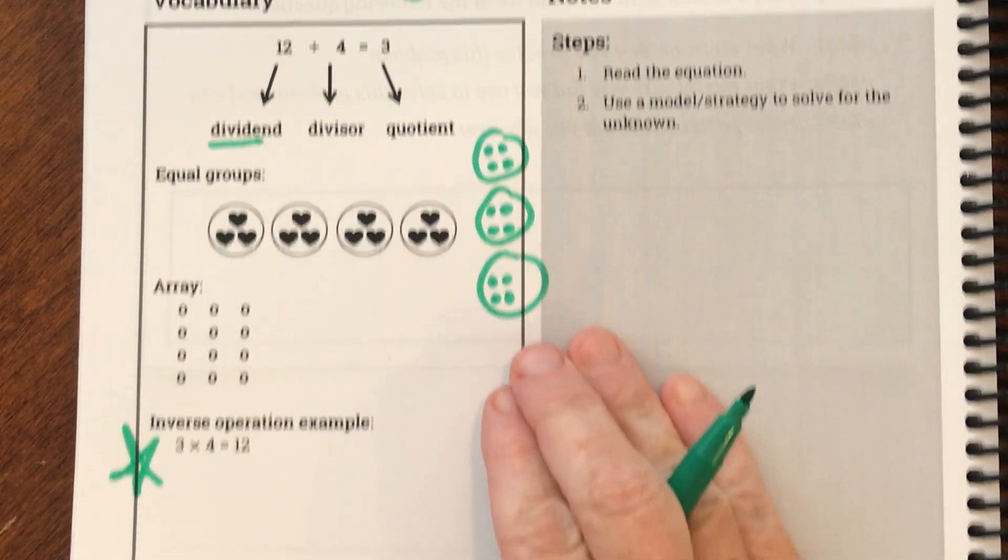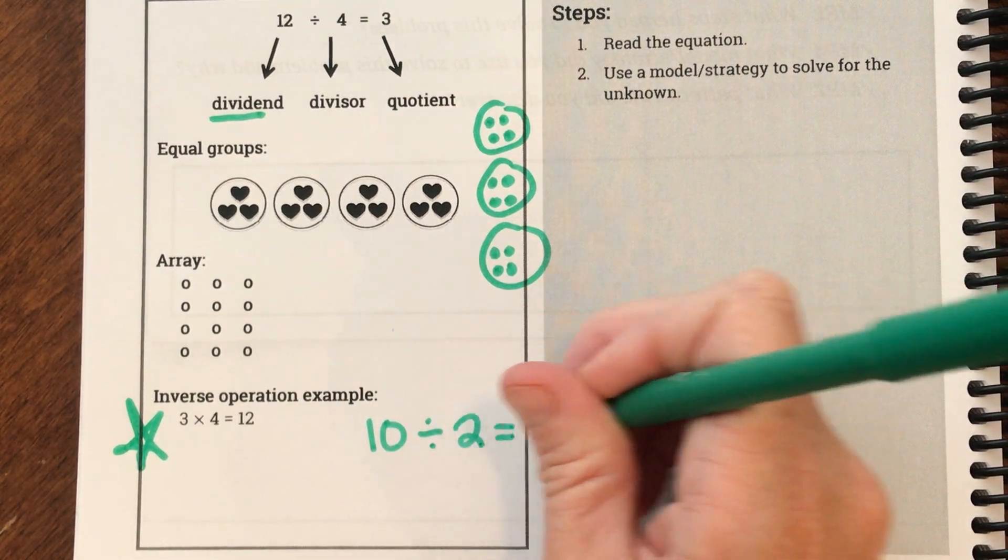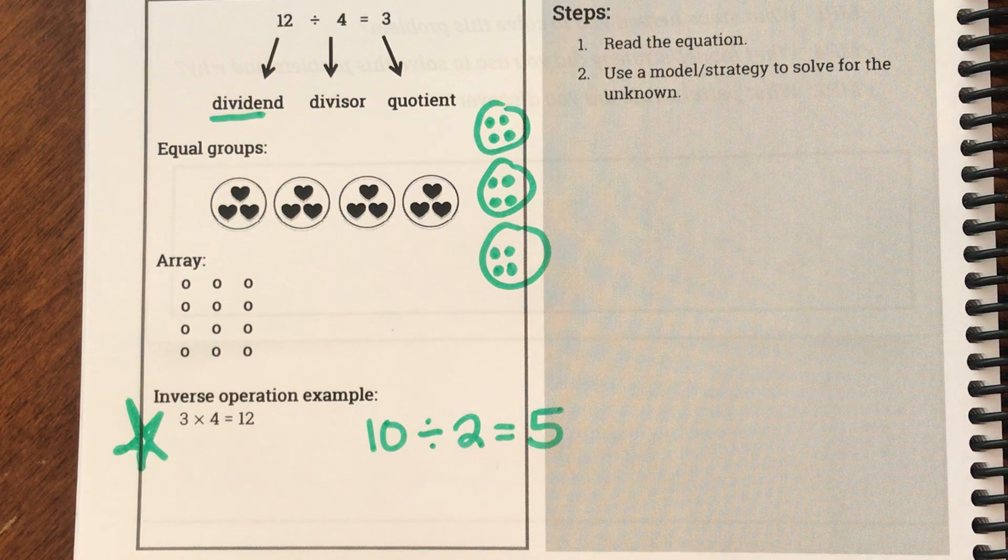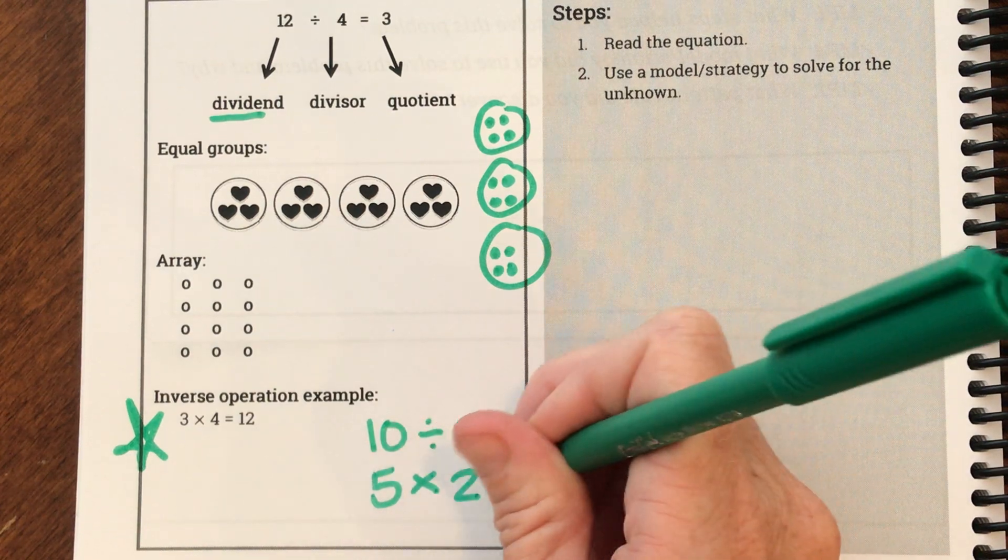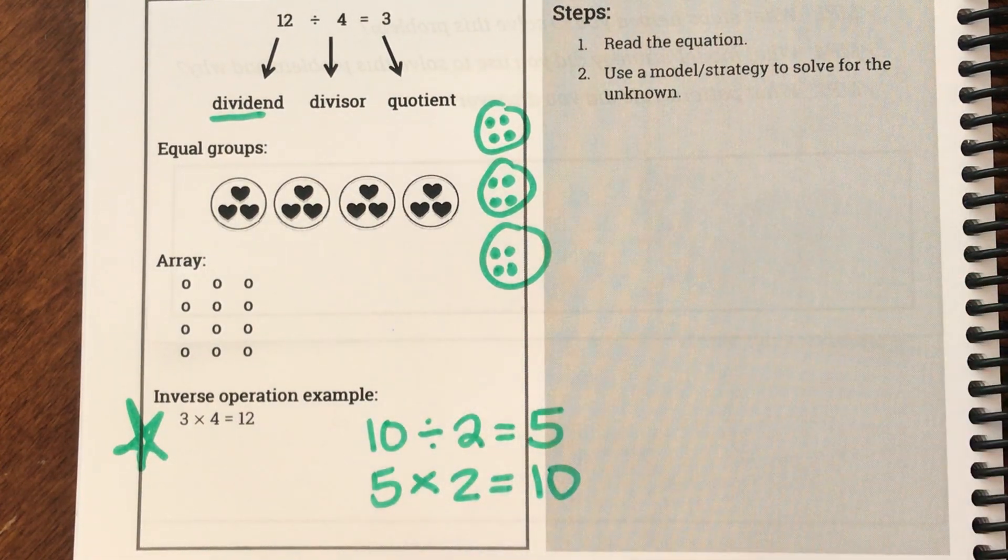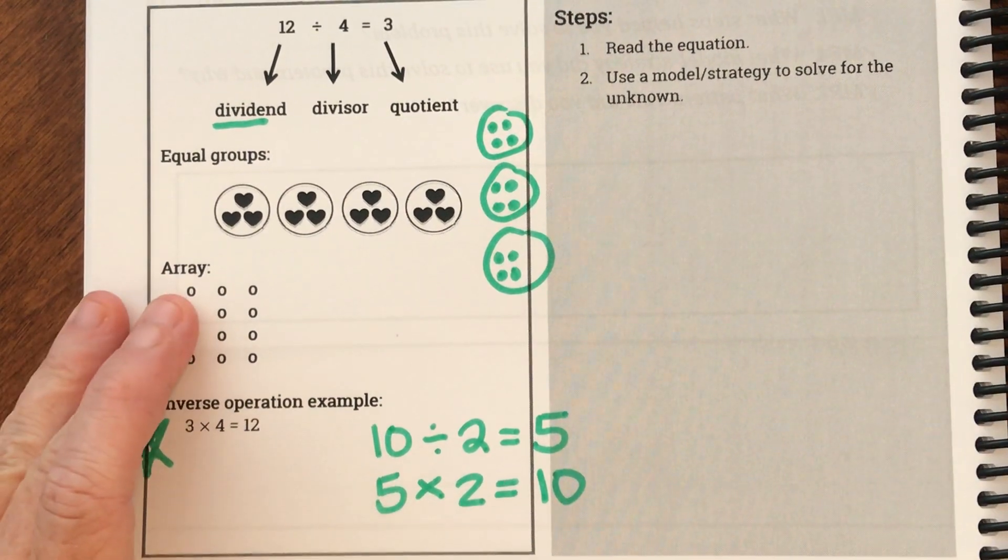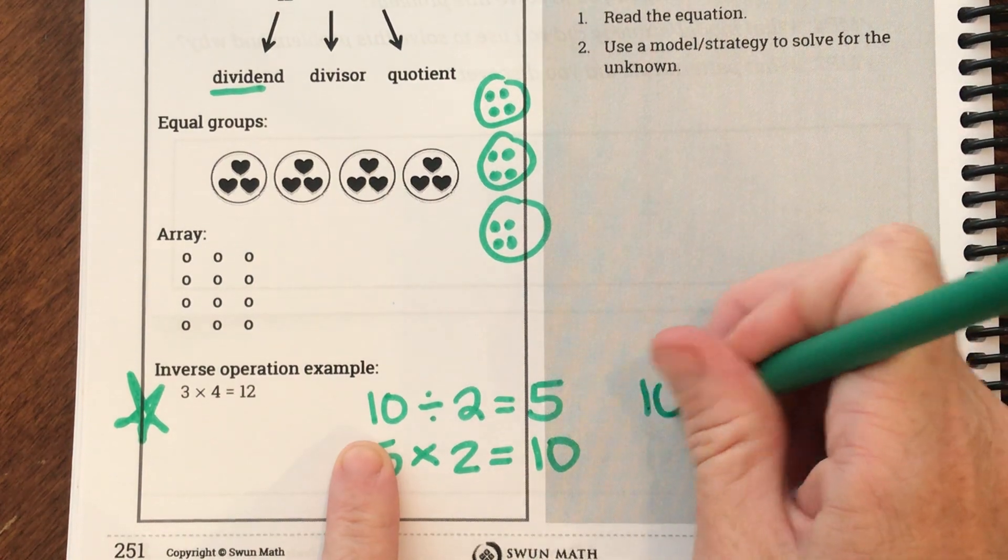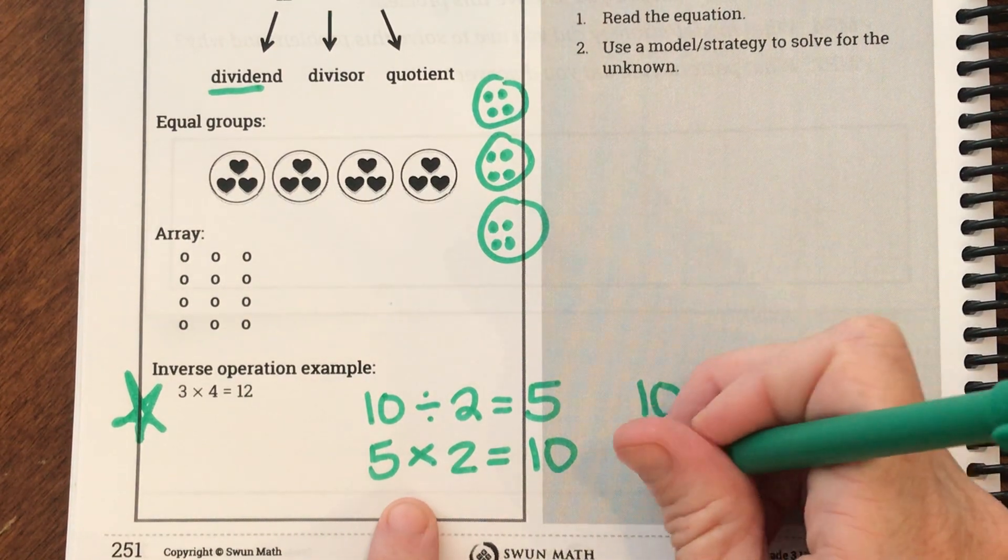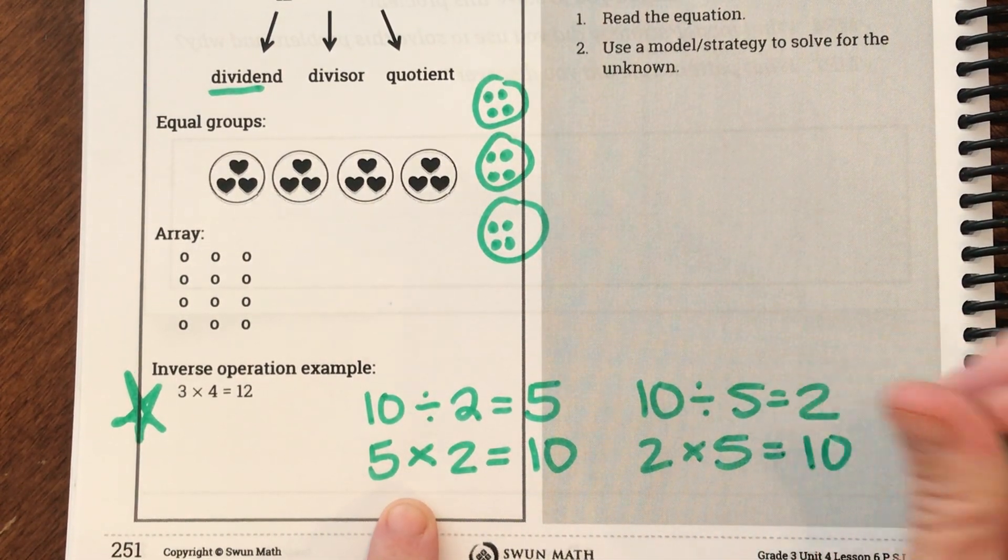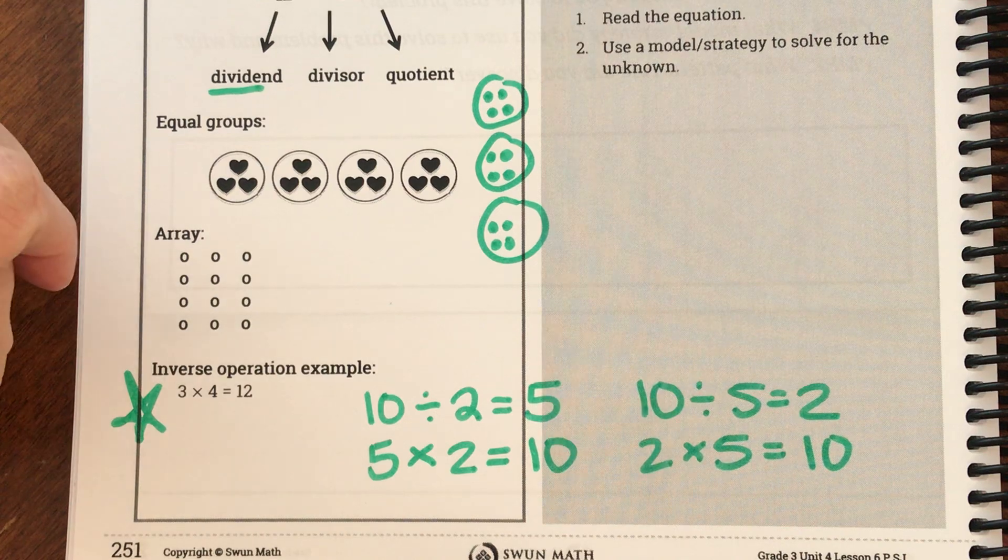The inverse operation is, let's do an example of one. So what if we have ten, and we divide it into two groups, we're going to have five in each group. But I also can, the inverse operation is five times two equals ten. Those are part of that fact family.